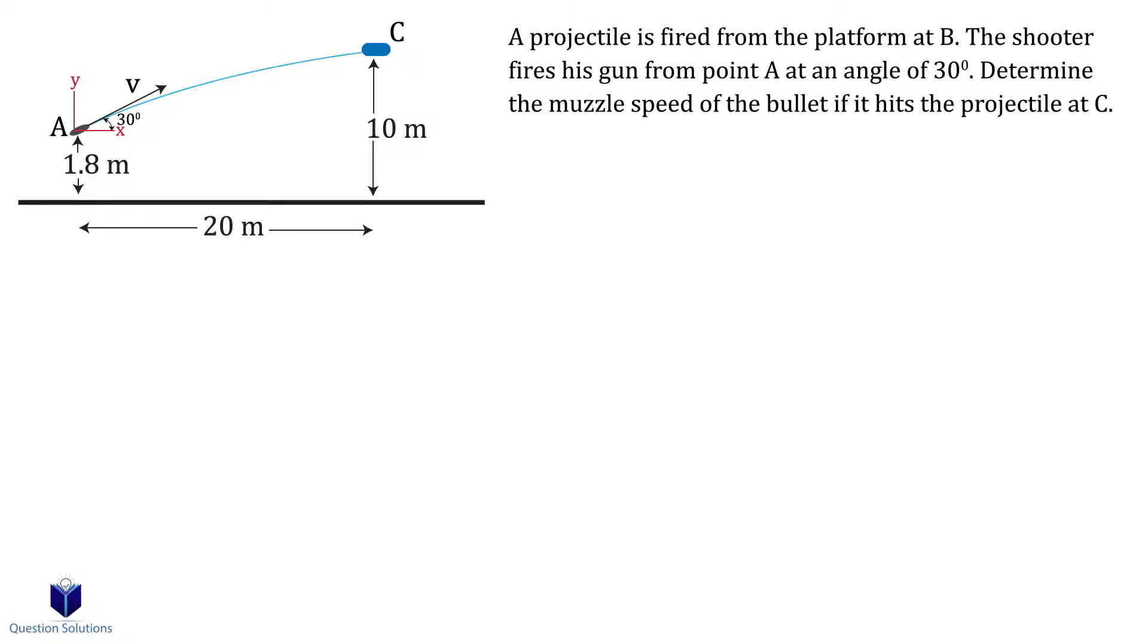In this question we need to figure out the muzzle speed of the bullet when it hits the projectile at C. Using our simplified diagram and our coordinate system we can write down what we know.